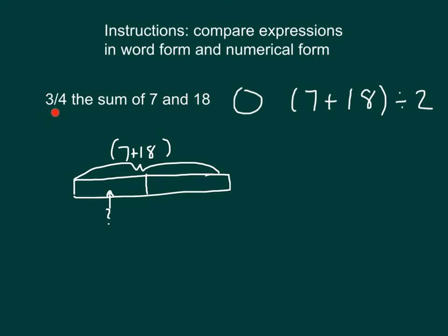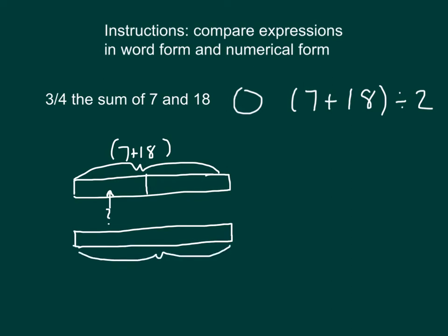Now, when we have 3 quarters of the sum of 7 and 18, we can draw that same bar model — the same length — because we have 7 plus 18 with that sum. And in this case, we're taking 3 quarters of it, so we have it divided into quarters. For that expression on the left, which was in word form, we have 3 quarters of it. We know 3 quarters of the sum of 7 and 18 is bigger than 1 half of it.